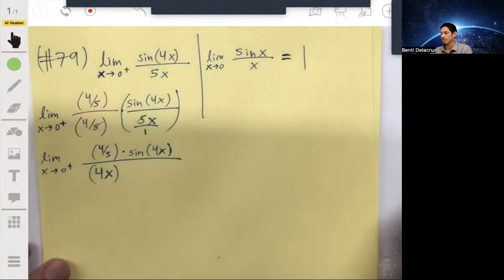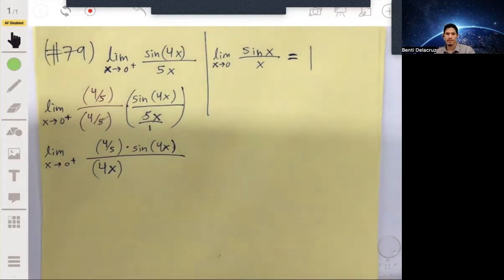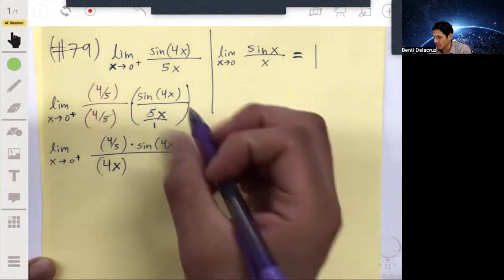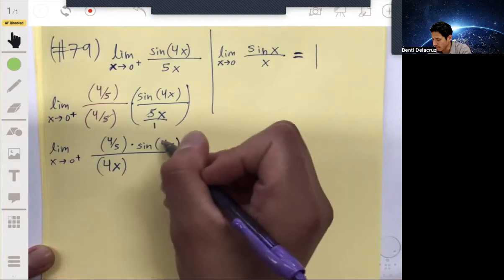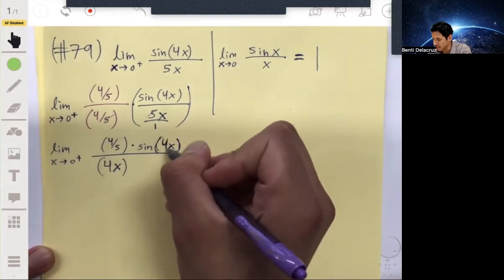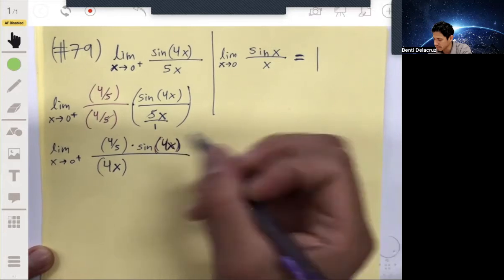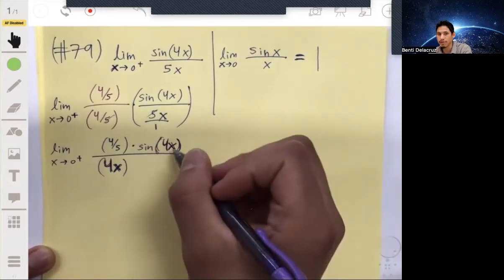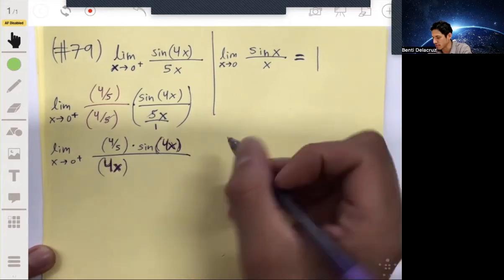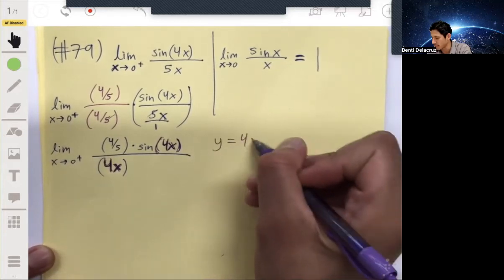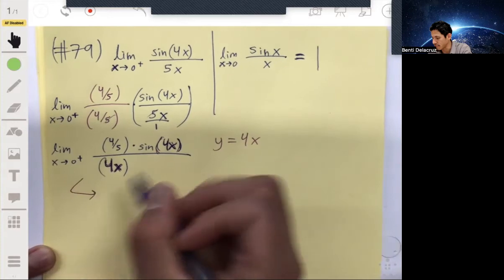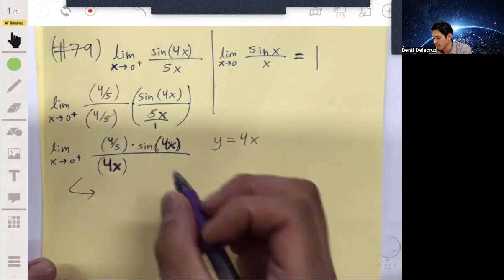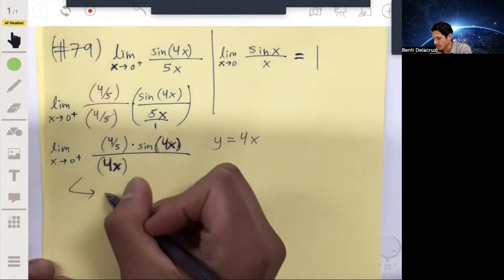And now here's the trick. You can see that you have now some form of sin(x) over x because we just have 4x and 4x here. So what we can do is call this 4x something else. We'll just say y equals 4x, and we do that because then we can rewrite this as the limit as x approaches zero.